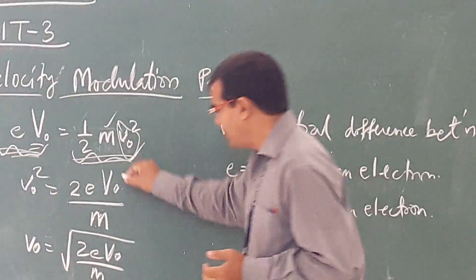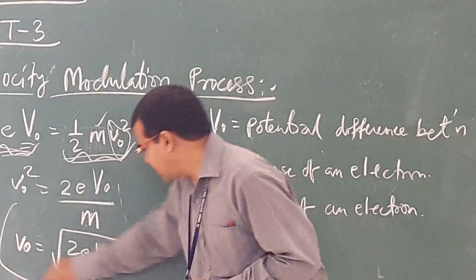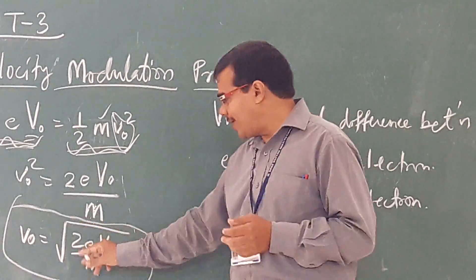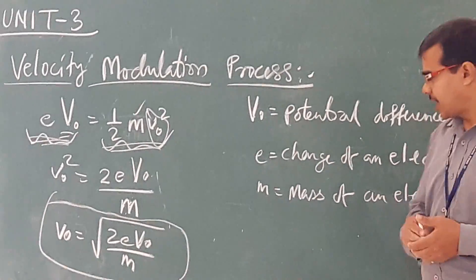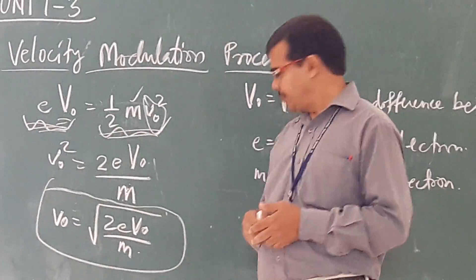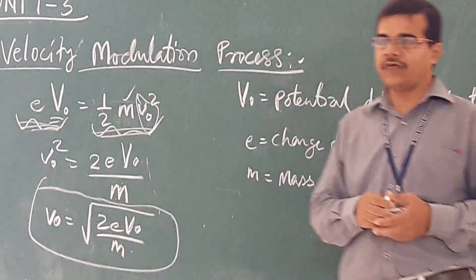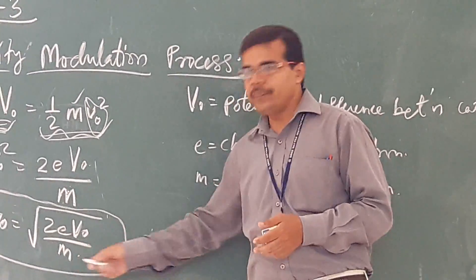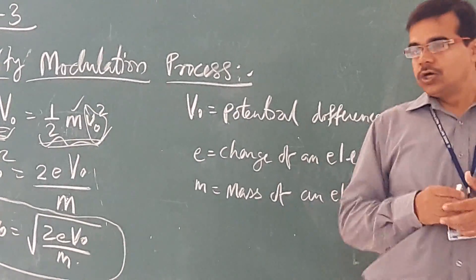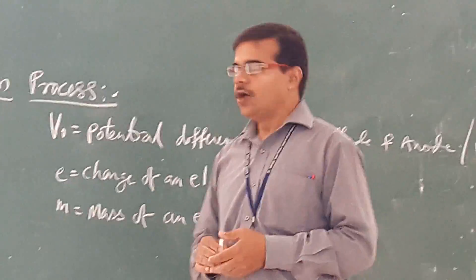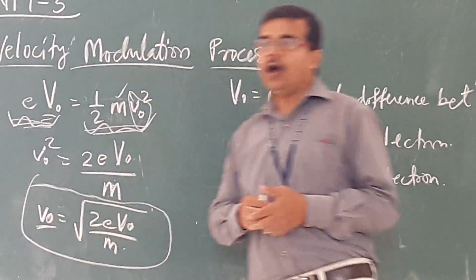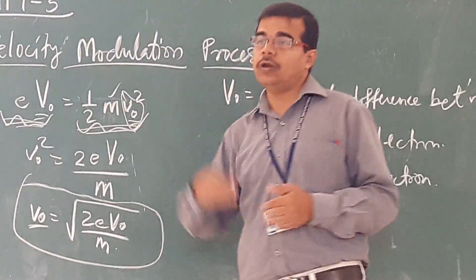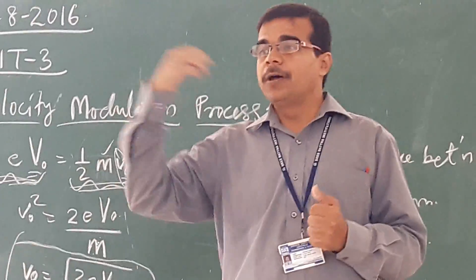We are trying to calculate what is the velocity of the electron. We get the velocity of the electron as the square root of 2eV₀/m, where small e is the charge of the electron, V₀ is the DC voltage, and m is the mass of the electron. This will be the velocity of the electron before reaching the buncher cavity.